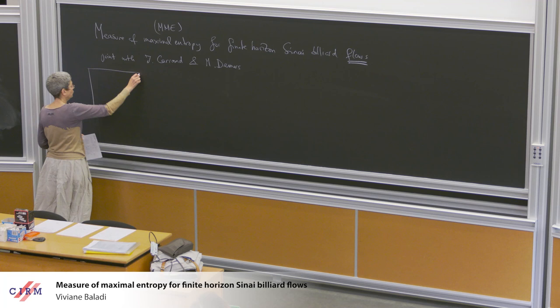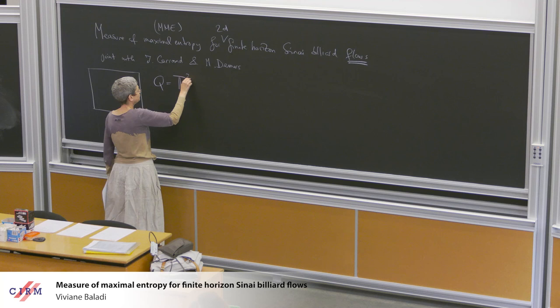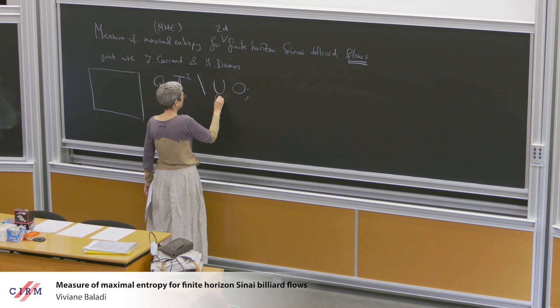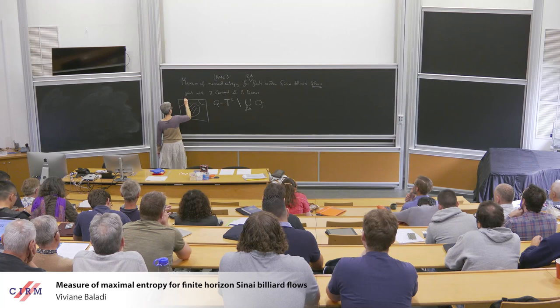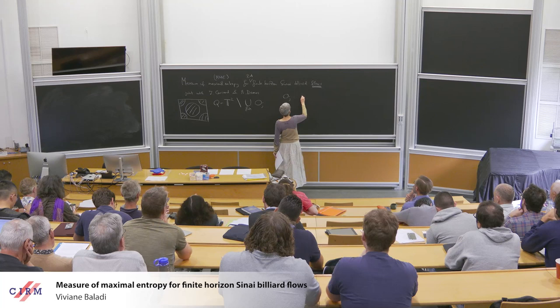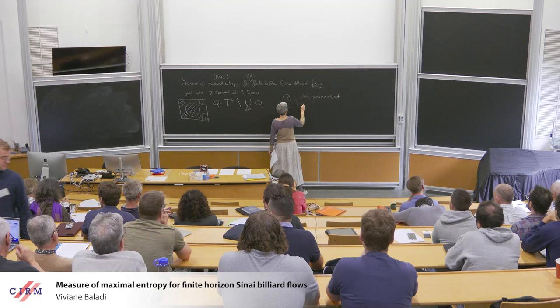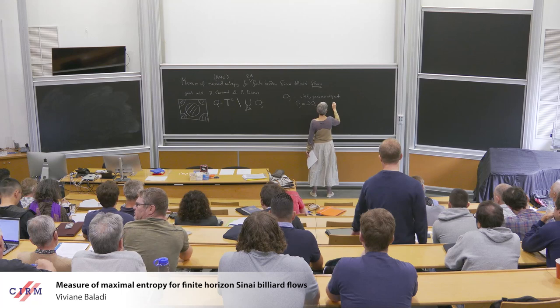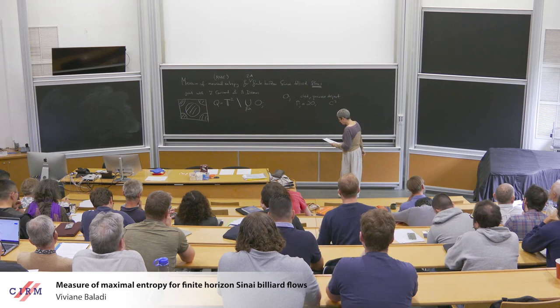What is a Sinai billiard? One thing missing from the title is that it's two-dimensional. The billiard table is a two-torus from which you remove a finite union of obstacles. The obstacles are closed, pairwise disjoint, and have smooth enough boundaries — C3 or C2 plus epsilon is enough — and each boundary has strictly positive curvature.